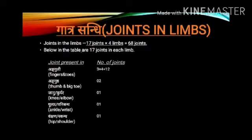Gathrasandhi — joints in the limbs: 17 joints × 4 limbs = 68 joints. The breakdown of 17 joints in each limb is as follows: Anguli (fingers/toes) — 3 × 4 = 12; Angushtha (thumb/big toe) — 2; Janu and Kurpara (knee and elbow) — 1 each.